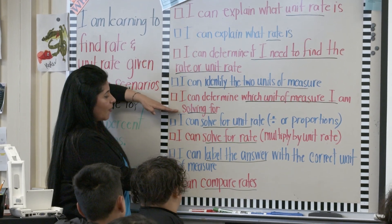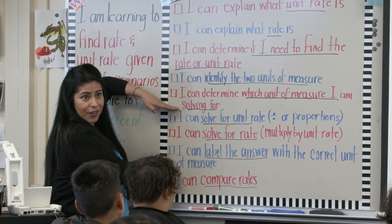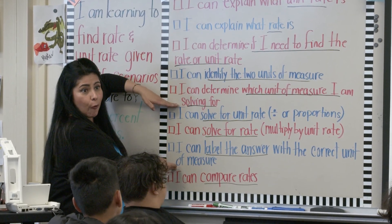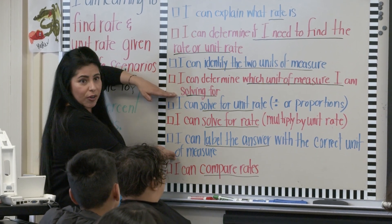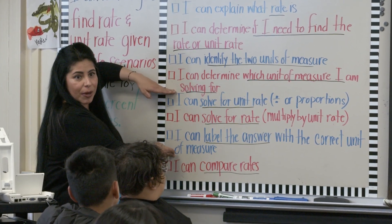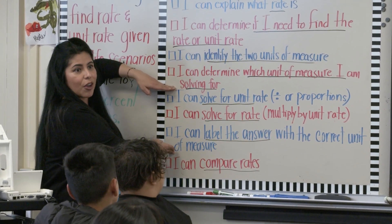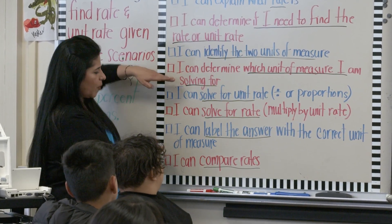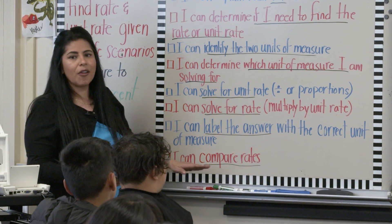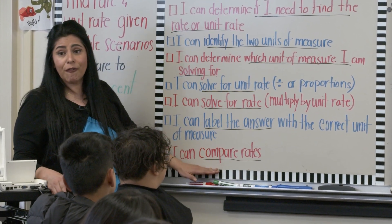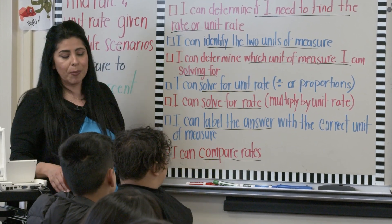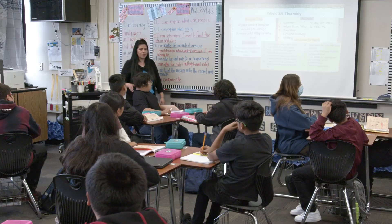And then we have another activity, a level four activity based on these success criteria. What two words are we going to be talking about? Rate and unit rate. And then our last activity is a level five, and we're going to be comparing rates.